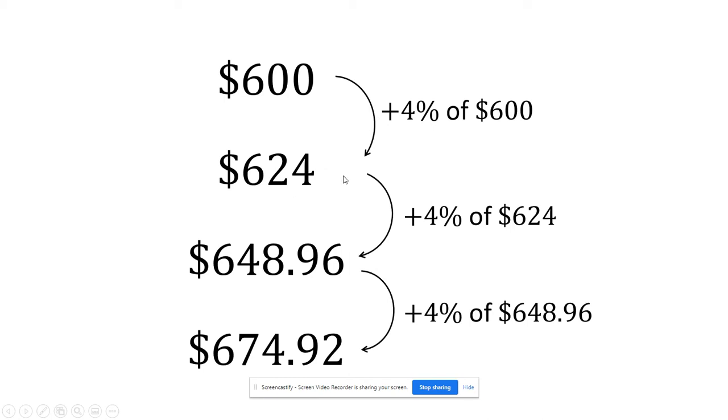And then we're going to take 4% again, but it's not going to be 4% of $600, it's going to be 4% of $624. And then the next time we're going to do 4% of our new total and we keep doing that.